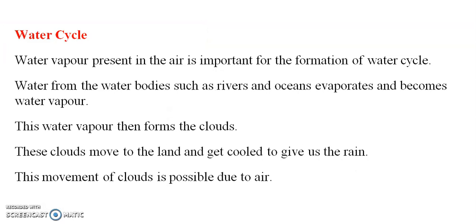Water cycle: water vapor present in air is important for the formation of the water cycle. Water forms water bodies such as rivers and oceans, which become water vapor. This water vapor then forms clouds. Then the cloud cools and precipitation occurs.